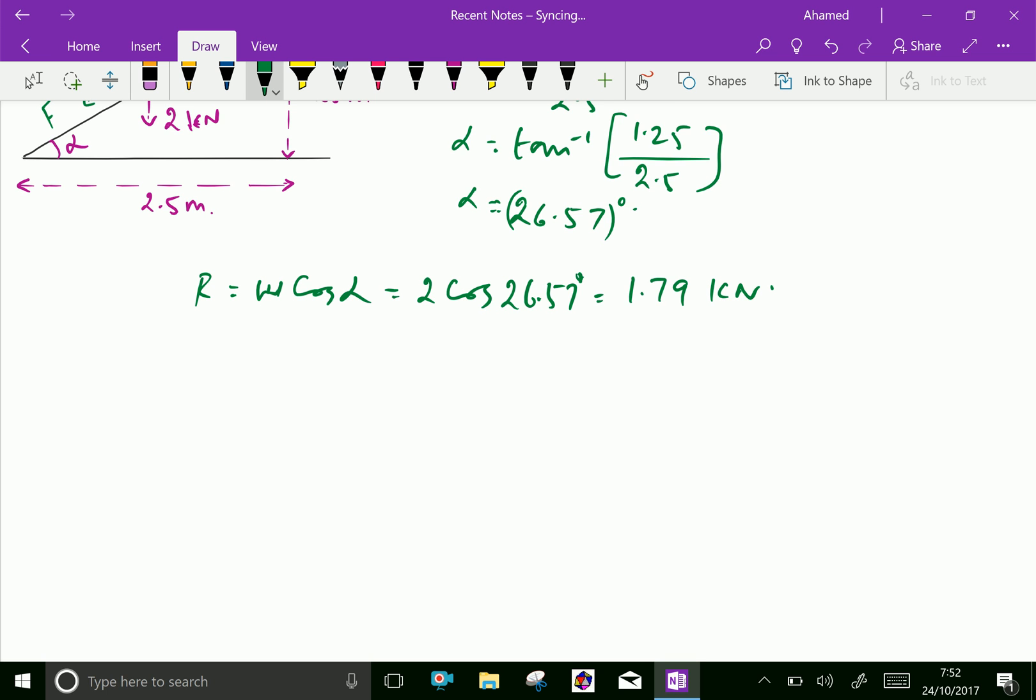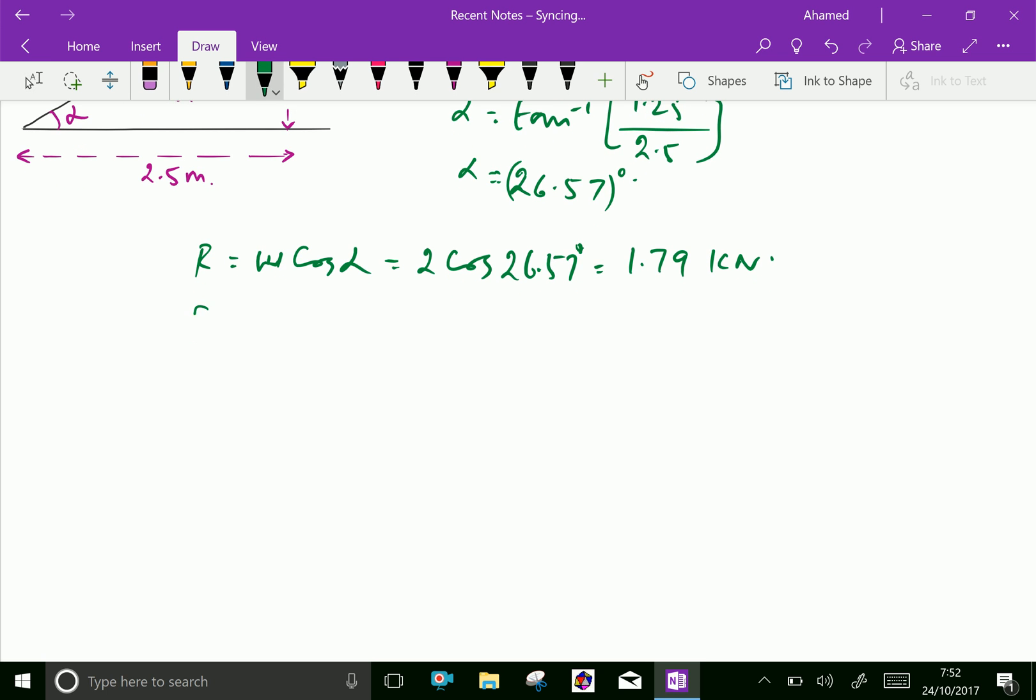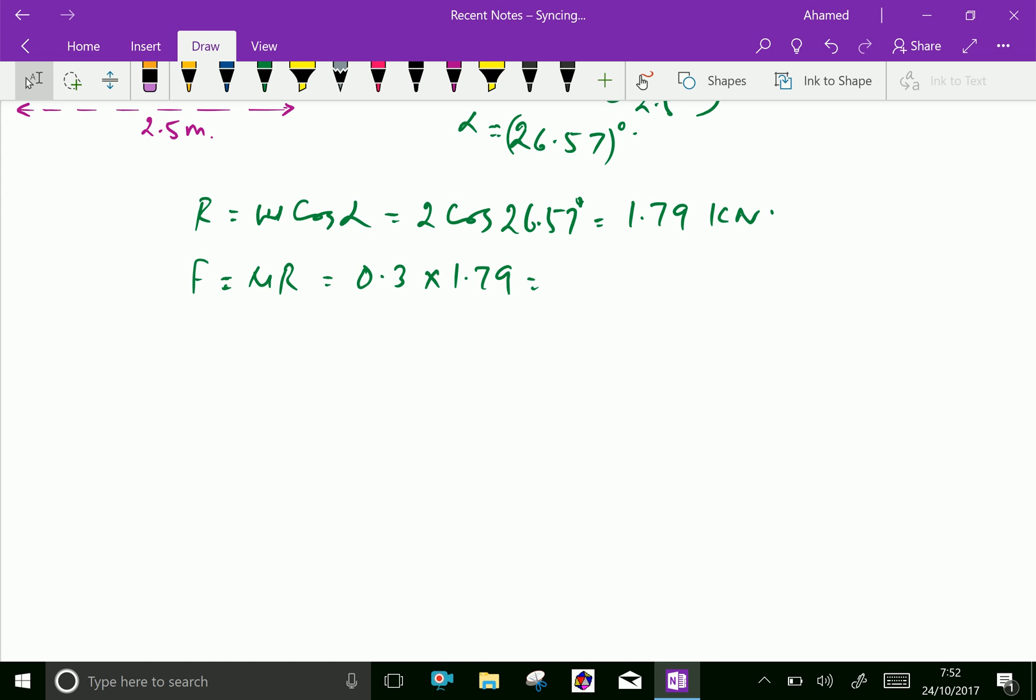Now force of friction F equals mu R. We know the mu is given as 0.3 and normal reaction is 1.79. Let us calculate this: 0.3 into 1.79 equals 0.537 kilonewton.